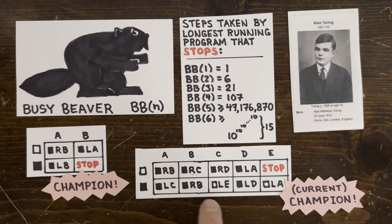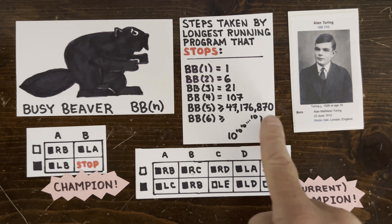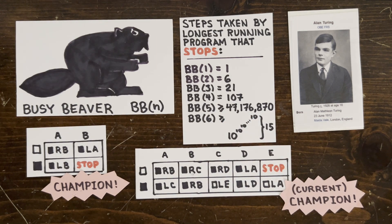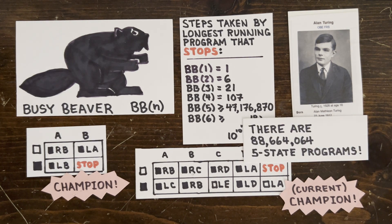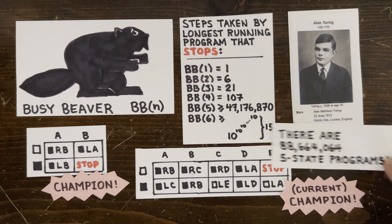The current BB(5) champion takes over 47 million steps, and there are a bunch of five-state machines that run longer, but most of them provably run forever. There are still a couple thousand holdouts though, any of which could suddenly stop and become the new champion.